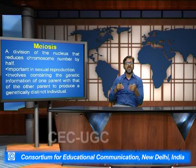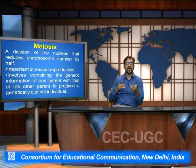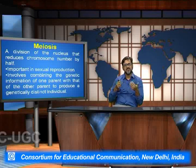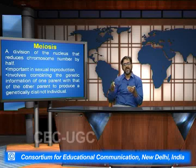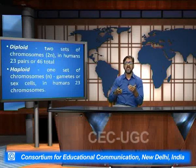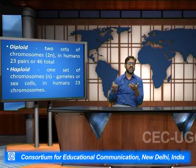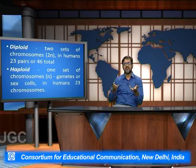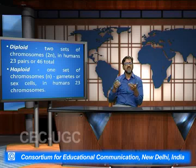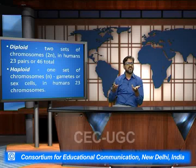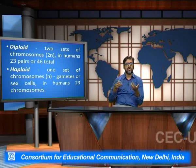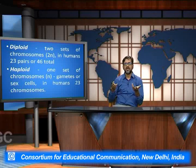Meiosis involves the combining of genetic information of one parent with that of the other parent to produce genetically different individuals, so it plays a very important role in the evolution process. The diploid are basically two sets of chromosomes, which is 2n. In humans the diploid chromosome number is 23 pairs, or 46 total numbers, two of which are the sex chromosomes.